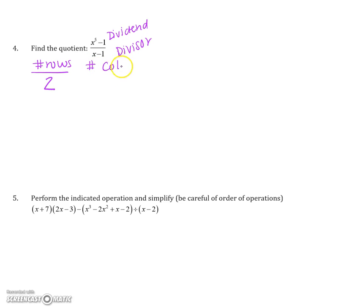And the number of columns. We're going to look at x to the 5th and x. So x to the 5th divided by x gives me x to the 4th. And 4 plus 1 gives me 5. So I'm going to have 2 rows and 5 columns.